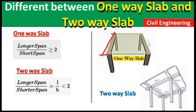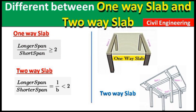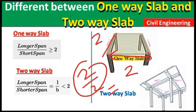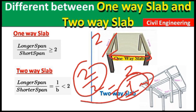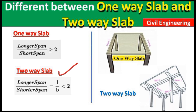Another example: if the longer span is 6 m and the shorter span is 2 m, then 6 divided by 2 equals 3, which is greater than 2 — so it is a one-way slab. For a two-way slab, the ratio of longer span to shorter span must be less than 2. For example, if both spans are 2 m, then 2 divided by 2 equals 1, which is less than 2 — so it is a two-way slab.